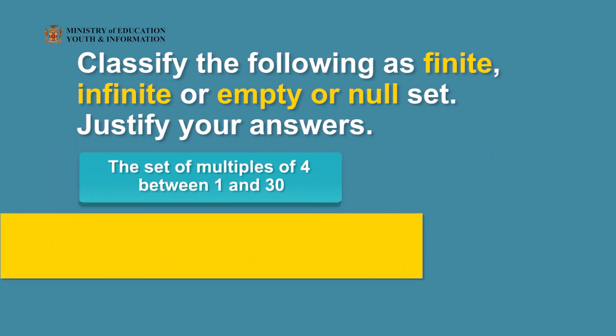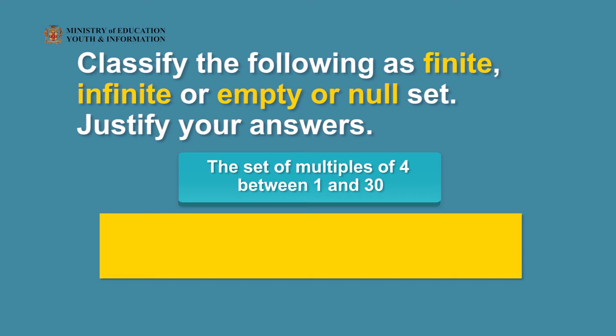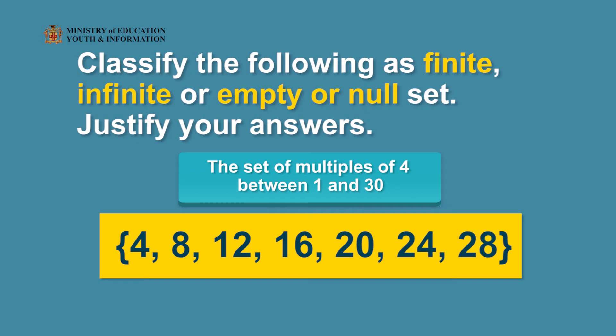Secondly, she asks you to list the set of all the multiples of 4 between 1 and 30. Very good — the set of multiples of 4 between 1 and 30 are: {8, 12, 16, 20, 24, 28}. It is therefore classified as a finite set.